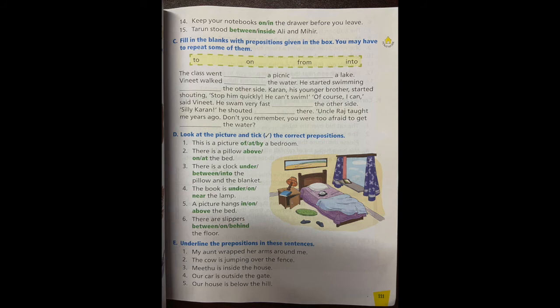Now look at section D: look at the picture and tick the correct prepositions. First one: this is a picture dash a bedroom, of, at, by. Which one is right? This is a picture of a bedroom. Yes, put a tick on of.